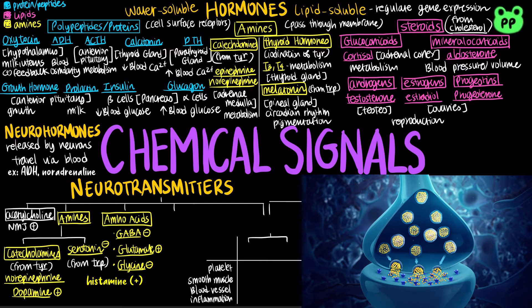Histamine is an excitatory neurotransmitter primarily involved in inflammatory responses, vasodilation, and regulation of immune response. Neuropeptides are small proteins that act on G-protein coupled receptors and are responsible for a slow-onset modulation of synaptic transmission. Examples of neuropeptides include substance P and met-enkephalin, or endorphin, both of which affect our perception of pain.